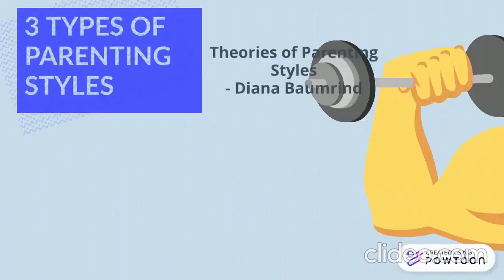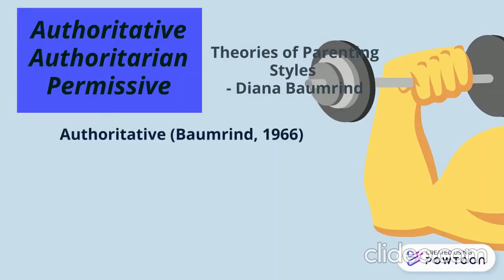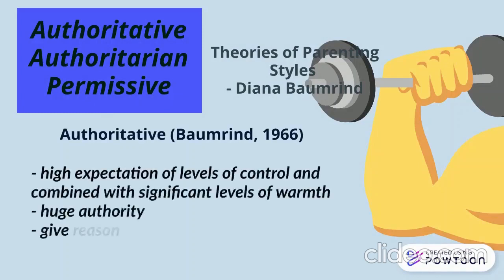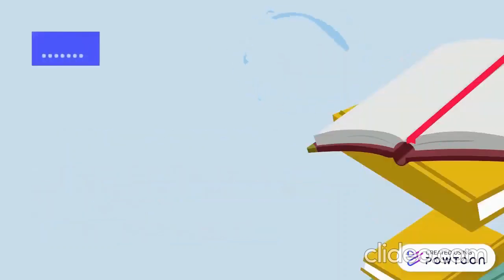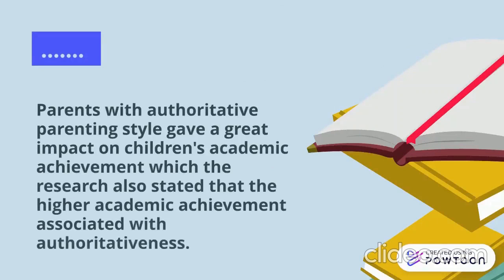Next are the theories of parenting styles by Diana Baumrind. There are three types of parenting styles: authoritative, authoritarian, and permissive. I will focus on the authoritative parenting style, which is related to parental involvement. Authoritative parenting shows high expectations and level of control combined with significant levels of warmth. Authoritative parents exercise authority over their child while giving freedom in conversation for opinions and discussion, and provide reasons for their expectations. Research shows that higher academic achievement is associated with authoritativeness.